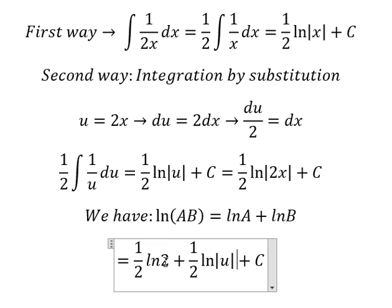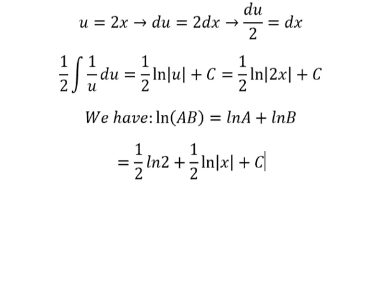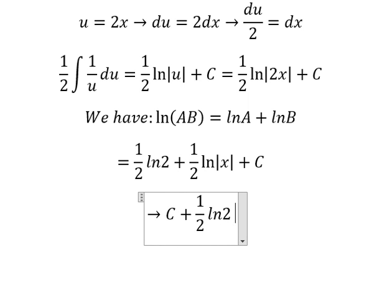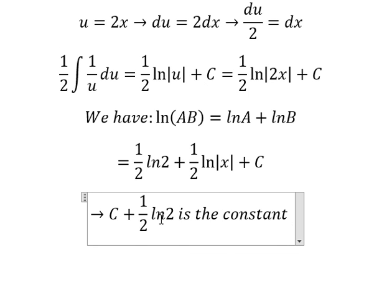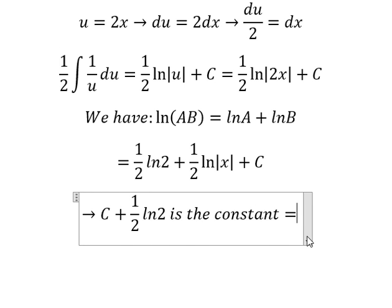Because the absolute value of number 2, that is about positive number. This one plus C, they still consider about the constant. So that means this one we can transform into C.